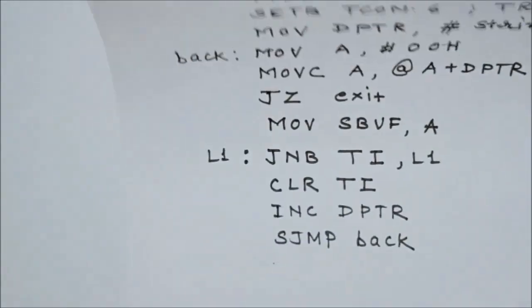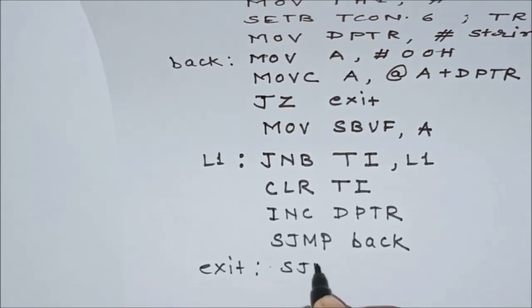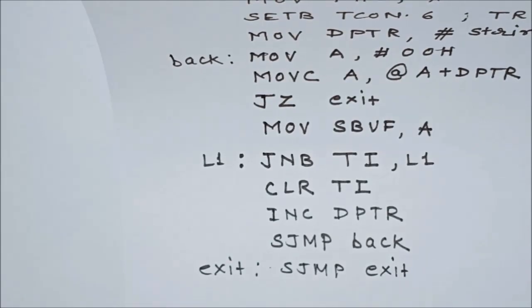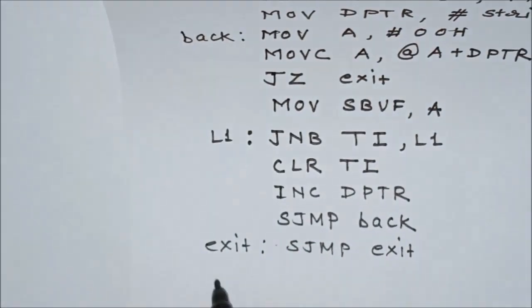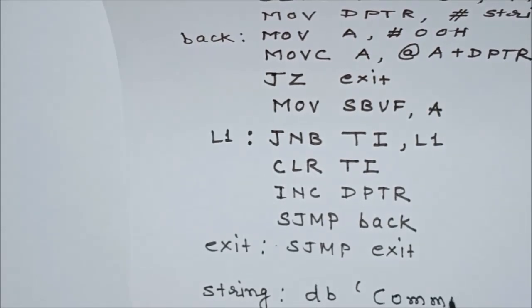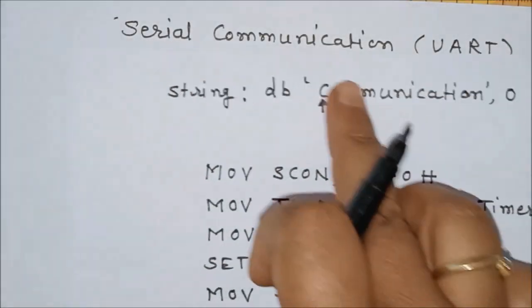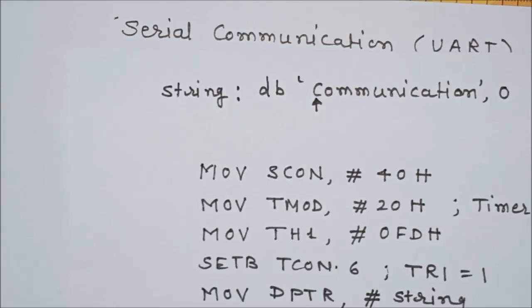For the exit label, we write: exit: SJMP exit, so after transmission of the complete string, the microcontroller continuously executes this instruction. After writing the program, we define the string in memory using DB and write the string we want to transmit in single quotes, followed by a null character 0 to mark the end. This program will serially transmit the string 'communication' — any string can be transmitted using this program.